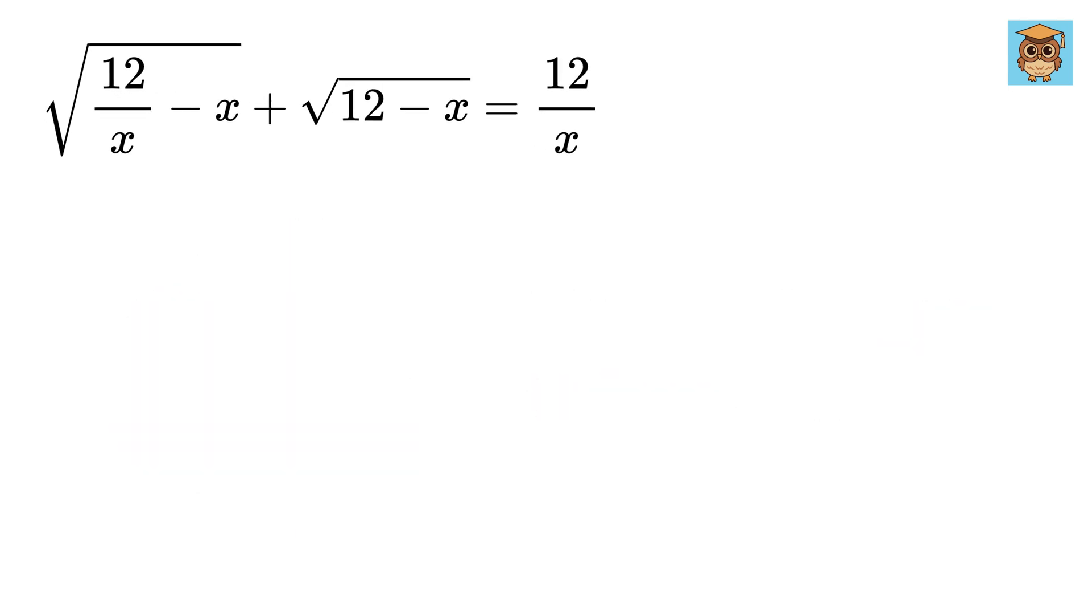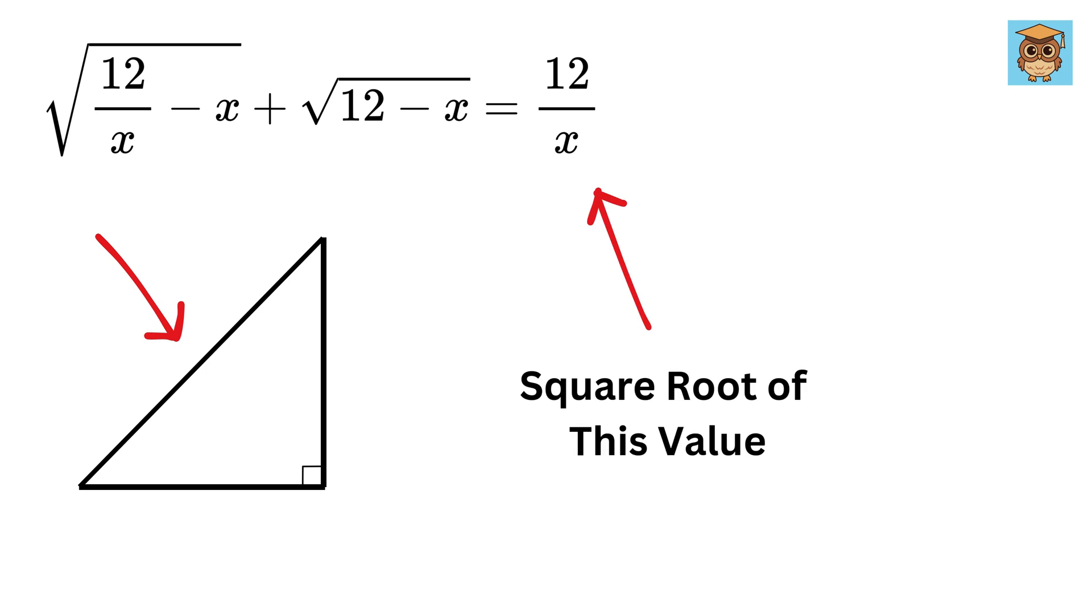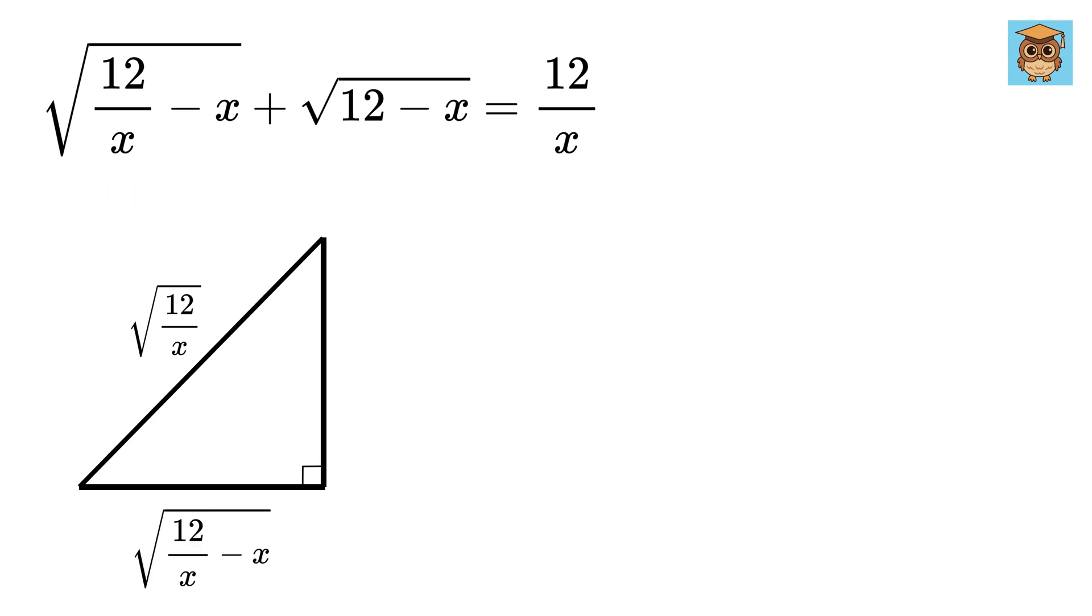Okay, in order to solve it using geometry, make a right triangle like this, such that the hypotenuse of this triangle is root 12 over x. Now, if we make the base of this triangle as this under root part, then what will be the value of this side of the triangle?